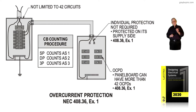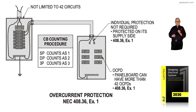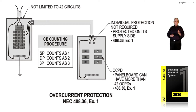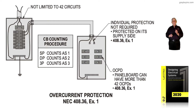We had to determine a way to count these breakers. The circuit breaker counting procedure is listed in the boxed-in information between the two pieces of equipment that you see in the drawing. A single pole breaker counts one, a double pole breaker counts two, and a three pole breaker counts three toward counting the number of circuit breakers in a panel board.